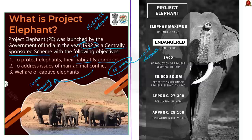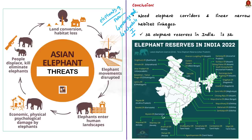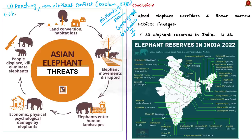India is home to nearly 60% of Asian elephants. While the number of elephants in India has increased, the Asian elephant is still listed as endangered in the IUCN Red List, and India has placed elephants in Schedule I of the Wildlife Protection Act 1972. The first major threat is poaching and man-elephant conflict — on average, nearly 500 humans and 1,000 elephants are killed annually due to confrontations. The second major threat is habitat fragmentation, which causes uneven distribution of the elephant population.